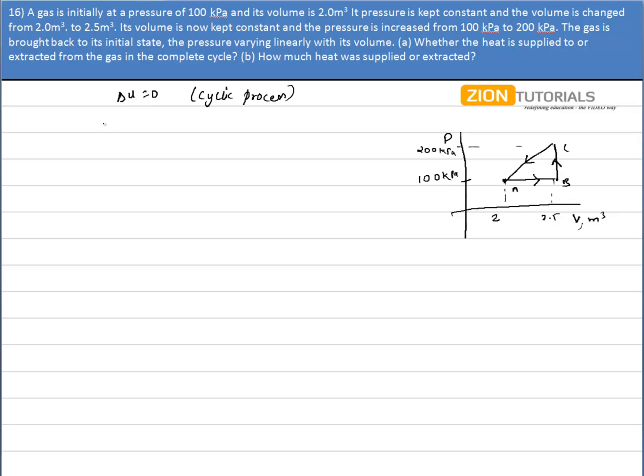So by the first law I can write delta Q is equal to work done. Now one thing to note: since the cycle is counter-clockwise, the work done will be negative. That is for sure. Now if work done is negative, then delta Q is also negative. And since delta Q is negative, heat is extracted from the system.